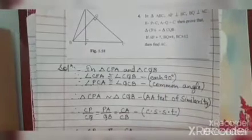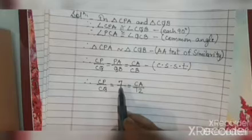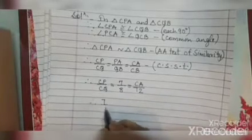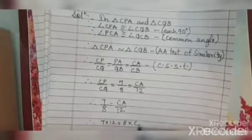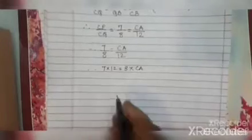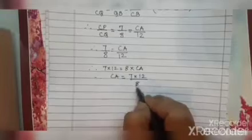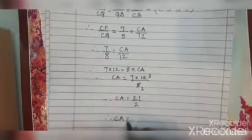Taking the second and third ratio: 7 upon 8 is equal to CA upon 12. Cross multiplying: CA is equal to 7 times 12 upon 8. Simplifying — 4 twos are 8, so CA equals 21 upon 2. Therefore CA is equal to 10.5.